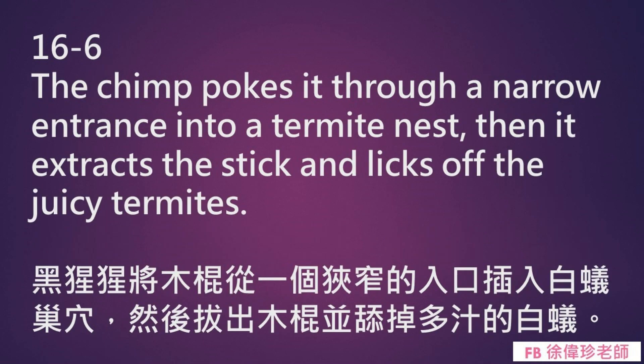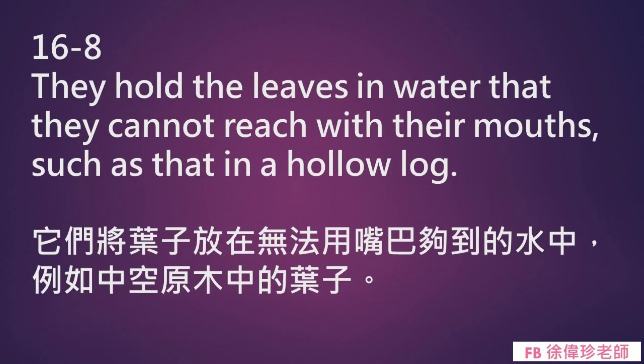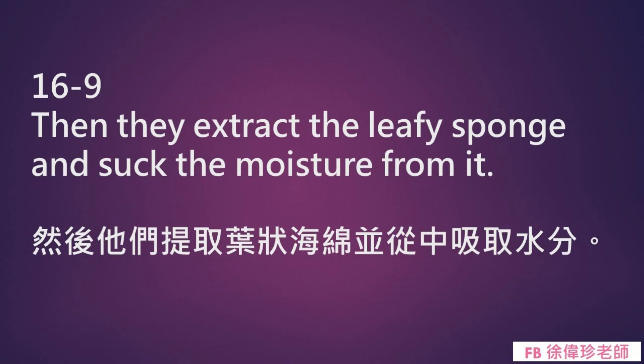The chimpanzee pokes the stick through a narrow entrance into a termite nest, then extracts the stick and licks off the juicy termites. 黑猩猩将木棍从一个狭窄的入口插入白蚁巢穴，然后拔出木棍并舔掉多汁的白蚁。 Chimps also crush leaves in their palms for use as sponges. They hold the leaves in water that they cannot reach with their mouths, such as that in a hollow log. Then they extract the leafy sponge and suck the moisture from it. 黑猩猩也会用手掌压碎树叶当海绵，将叶子放在无法用嘴够到的水中，例如中空原木中的水，然后提取叶状海绵并从中吸取水分。